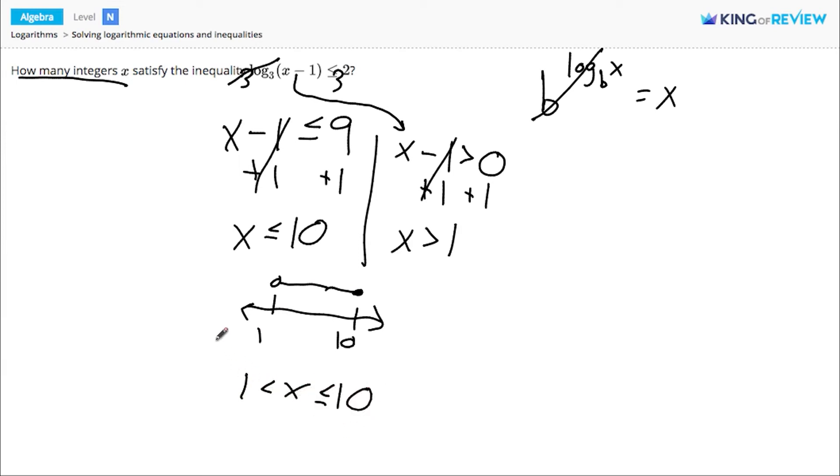Now we need to decide how many integers there are in this interval. 1 does not count because it's 1 is less than x, not 1 is less than or equal to x. So we have to start with 2.